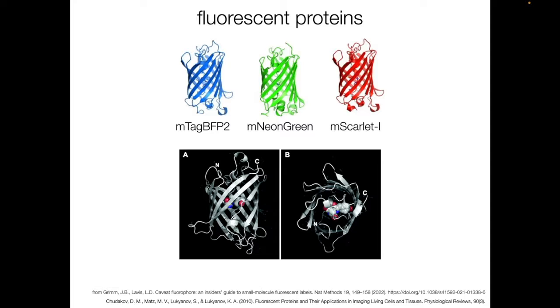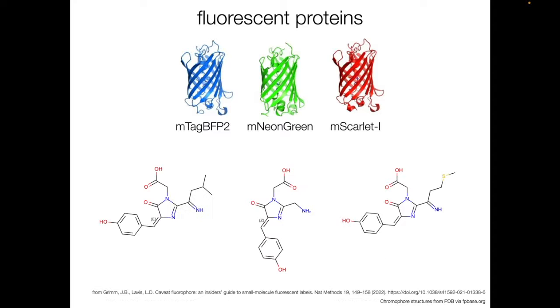The spectral differences in these fluorescent proteins come from differences in the chromophore structures. Here are the chromophore structures for the pictured fluorescent proteins. The structures look a bit like the small molecule fluorophores we looked at earlier, in that they have similar aromatic ring structures.